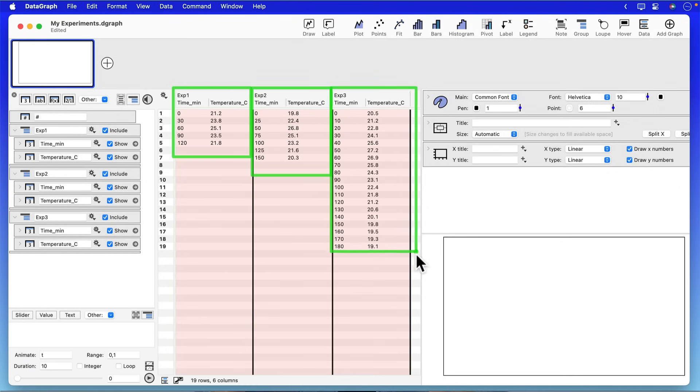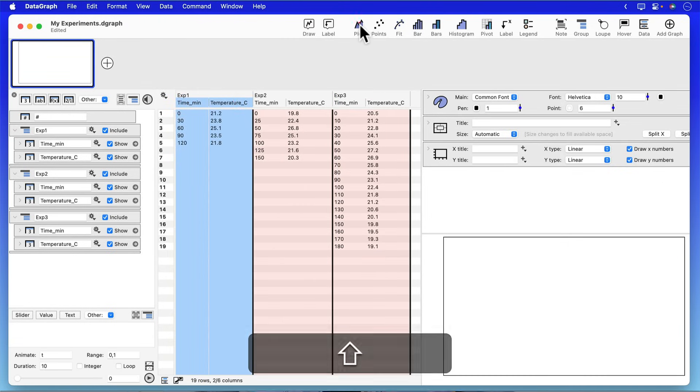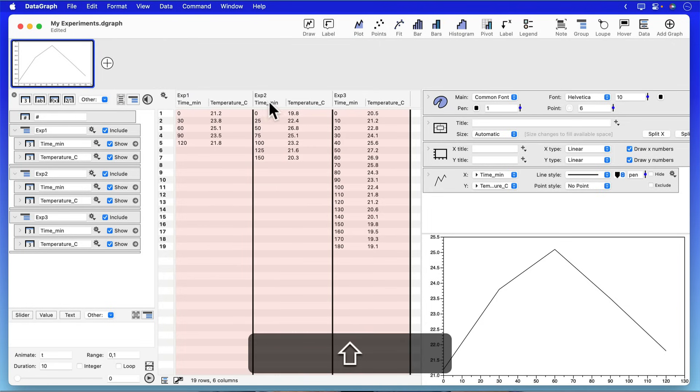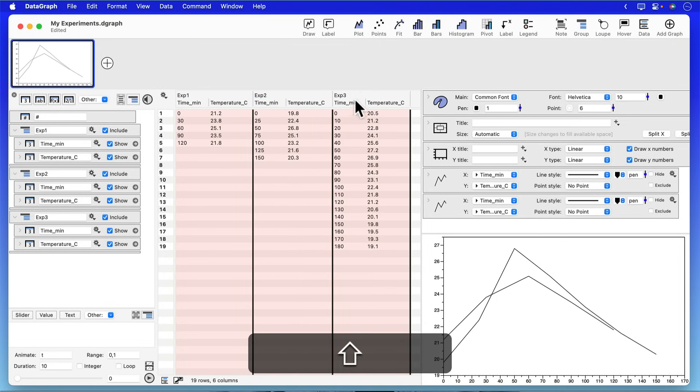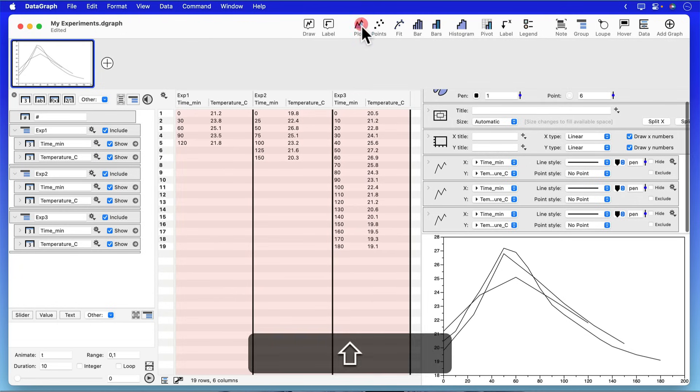And to put this on the same graph all I have to do is select my first two columns, add a line plot, select the next two, add another line plot, and the last third group and add my final line plot. And that's all I need to do to get this data all on the same graph.